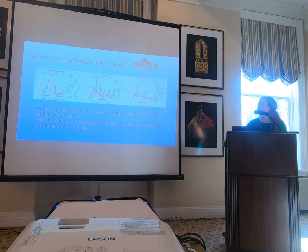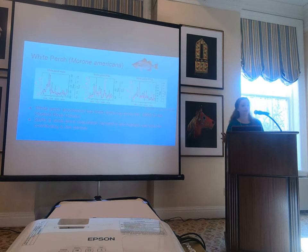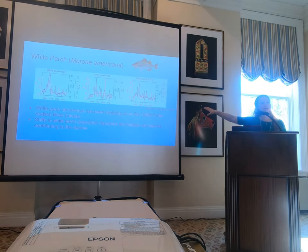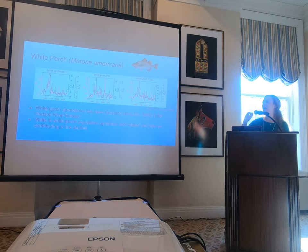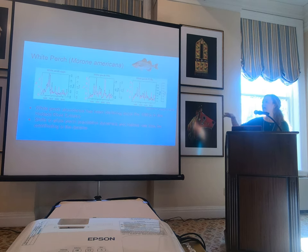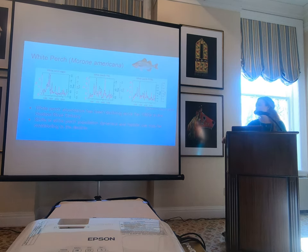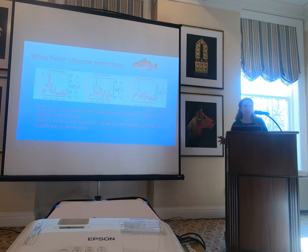Looking at what's been going on with white perch in the Hudson River estuary, these figures are taken from Chang et al. They are modeled and design-based abundance indices for three different white perch life stages: eggs, yolk sac larvae, and post yolk sac larvae. Regardless of life stage, white perch abundance has been declining since the 1980s in the Hudson River estuary, and shifts in white perch population dynamics and habitat use may be contributing to the decline.